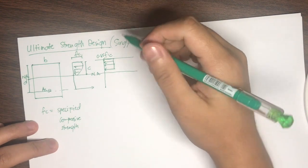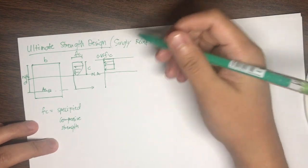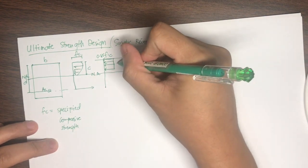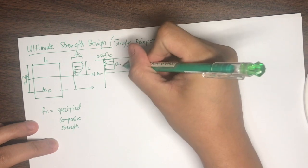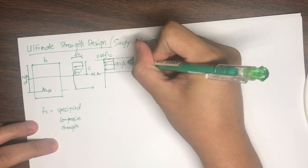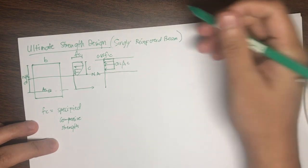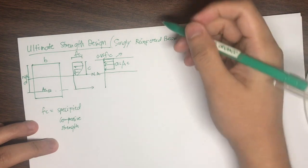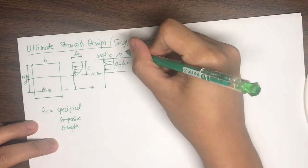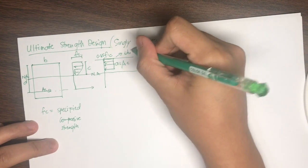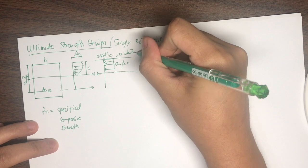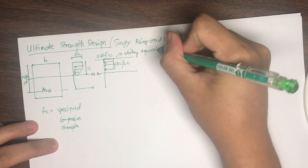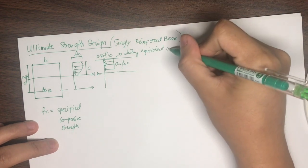In the rectangular compression block, the depth is only a, where a is equal to beta1 times c. This rectangular compression block is known as the Whitney equivalent compression block.